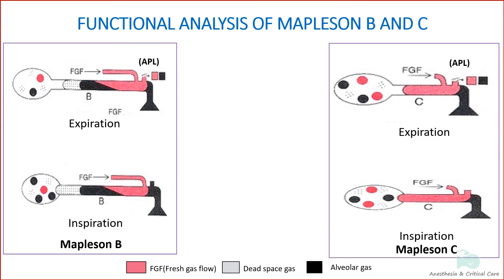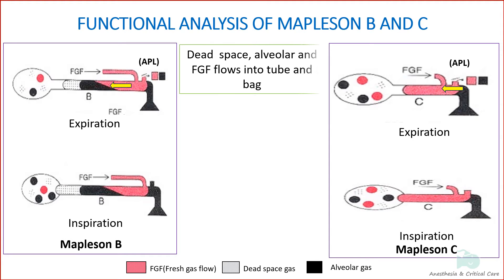The functioning of Mapleson B is straightforward. Since the FGF inlet is near the patient end, during expiration the first part of expired gas — that is, dead space gas and alveolar gas — passes down the corrugated tubing along with FGF.